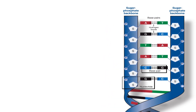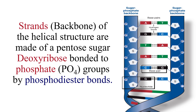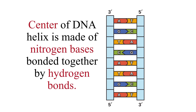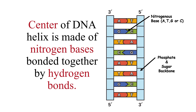Now if you look closely into the backbone or the DNA structure, you will find that DNA consists of nucleotides. A nucleotide is formed of a sugar-phosphate and a nitrogenous base. The sugar-phosphate makes the backbone while the nitrogenous bases make the interior of DNA. The center is formed of the nitrogenous bases while the backbone consists of sugar and phosphate molecules.